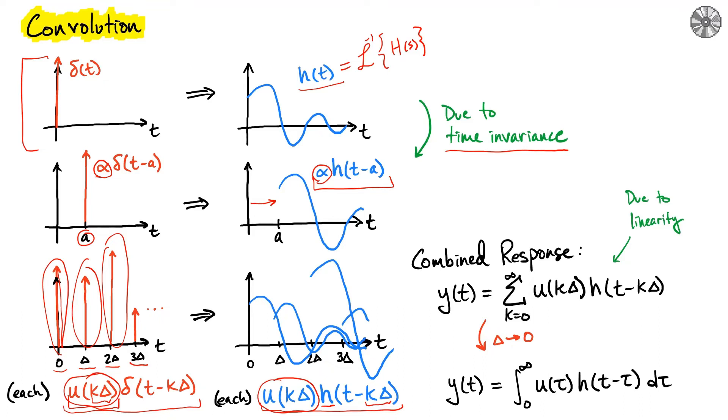If this is the response to each one of them, then the complete response y(t) is the sum of all these responses. This notion—that the response is the sum of the individual responses to these individual pulses—is something you started to see in the second lab, where you saw that we could add the responses together and that gave you the response of the sum of a bunch of inputs.